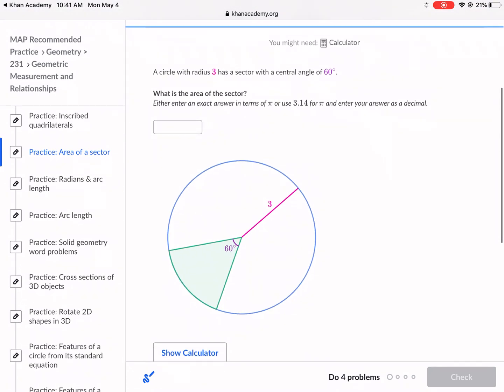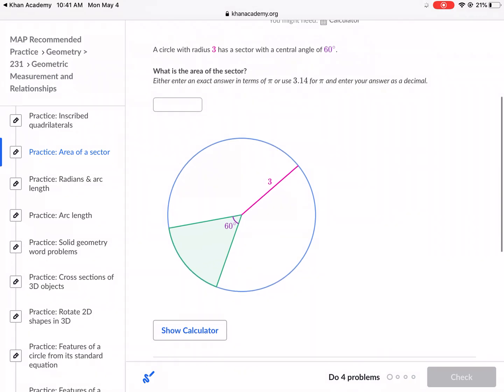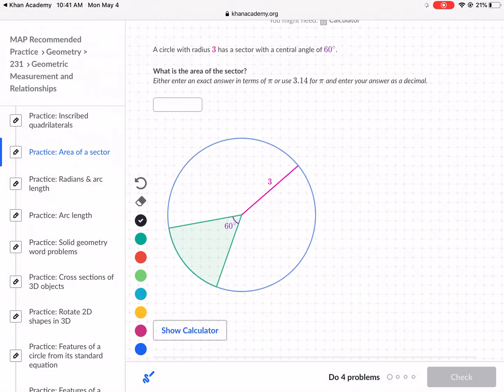The first problem is a circle with radius 3 has a sector with a central angle of 60 degrees. So it asks what is the area? We got to understand first, what are we talking about when we're talking about the area of a sector? So a sector is the part of a circle that is composed of two radii connecting to the center of a circle, and then we have a central angle here.